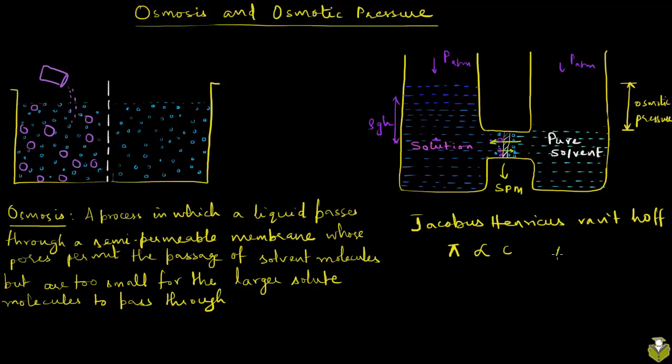He also said it is directly proportional to temperature, and came up with this formula: osmotic pressure equals CRT, where R is the universal gas constant. The proportionality constant is R, just like in the ideal gas law.